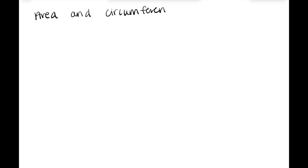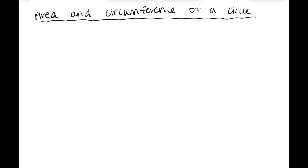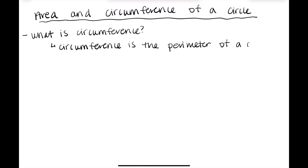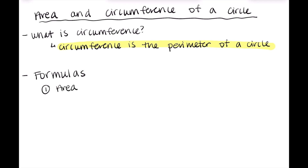So first off, what is area and what is circumference of a circle? What do these terms mean? Based off of our last video, we should be familiar with what area is — area is the space inside of a shape. But this word circumference, that's a new one. So let's go through and define what circumference is. Circumference is just the perimeter of a circle — it's a specific word for circles in particular. And perimeter is the measure of the distance around a shape, so it's just the distance around a circle, and we call it the circumference.